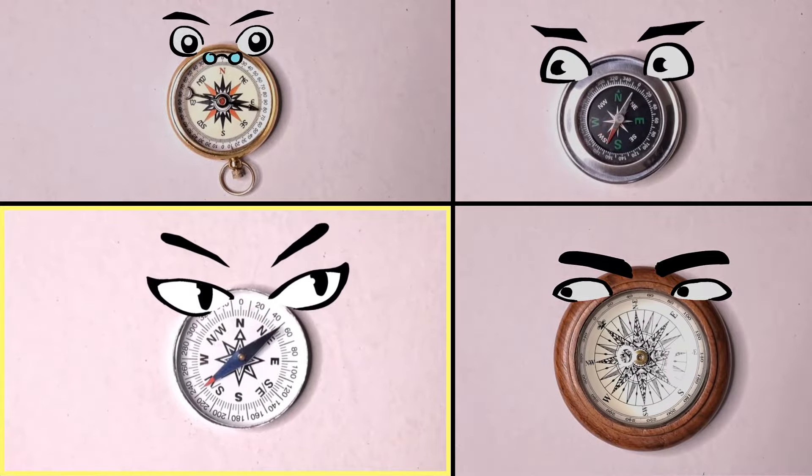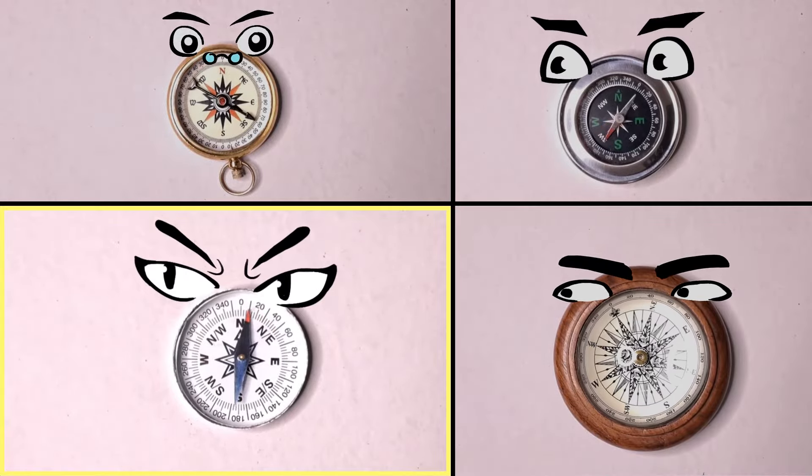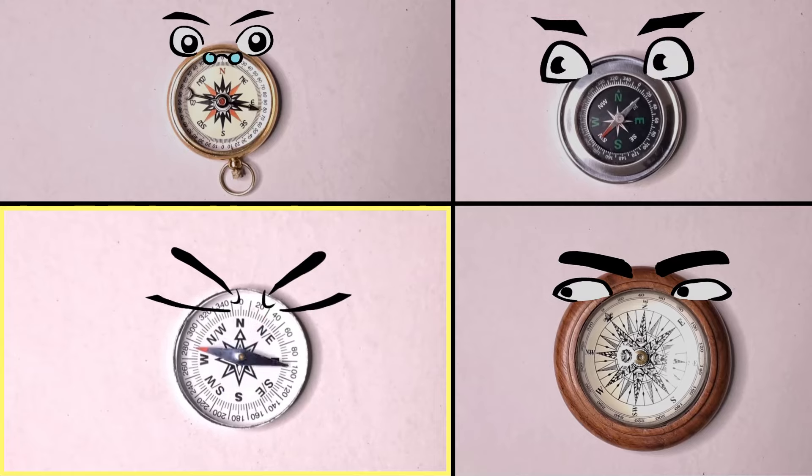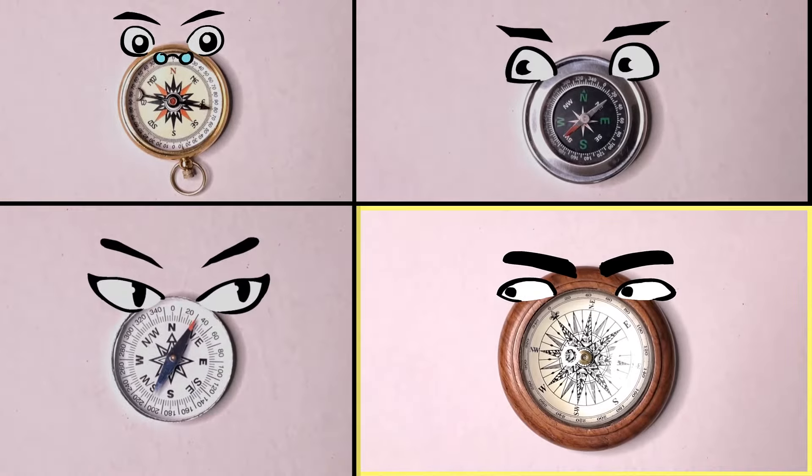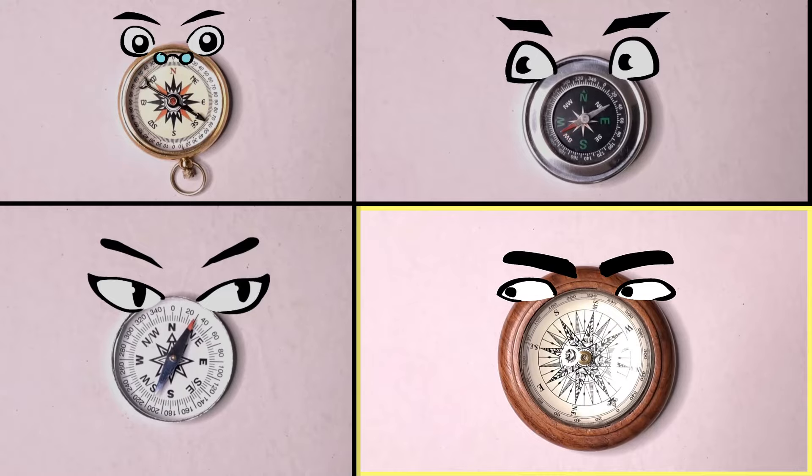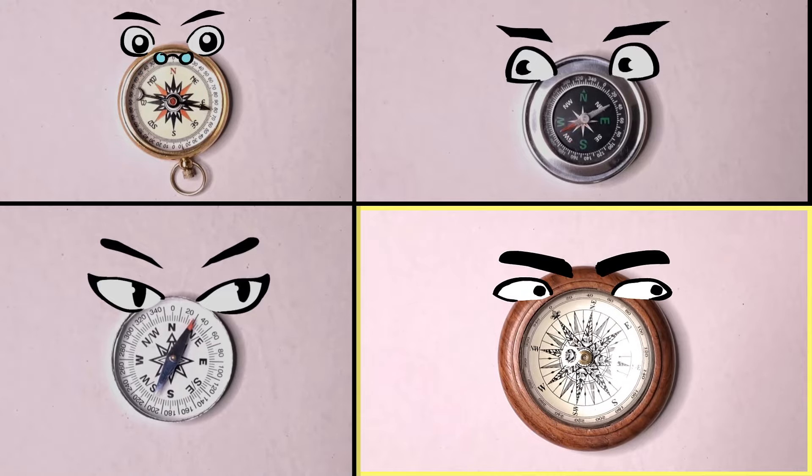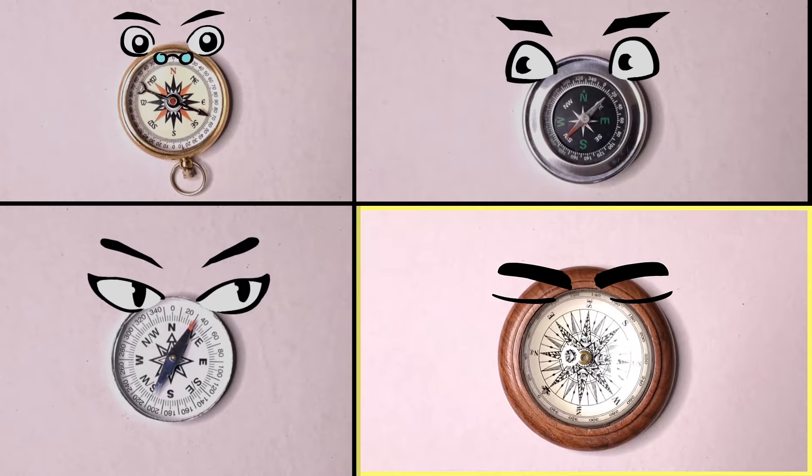Or north is just a social construct created by the elite to oppress the rest of us. There are no directions. Or north is not one direction. It's a spectrum of directions. All directions are north. There is no south.